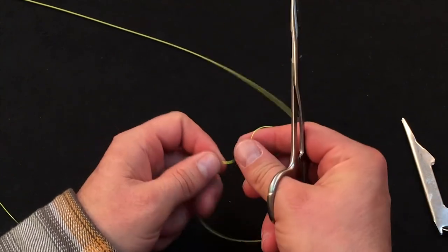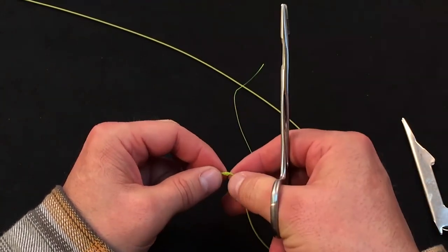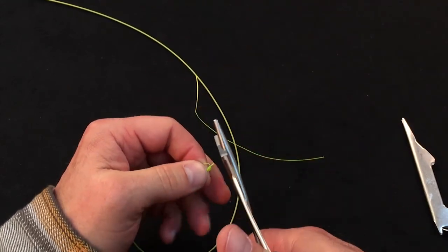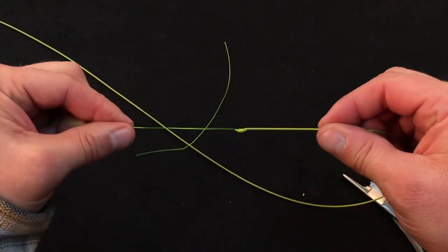We'll come back in, trim the tag off the butt, and trim the nub of fly line that's left. And there you have it.